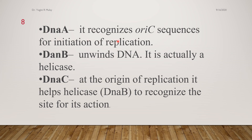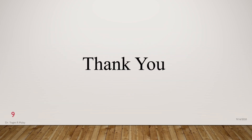Number one, DNA A recognizes the OriC sequence for the initiation of replication. DNA B protein unwinds the DNA and is known as the helicase. DNA C protein helps the helicase enzyme to recognize the site for its action. Thus, we have seen the importance of these three proteins in the formation of the pre-priming complex.